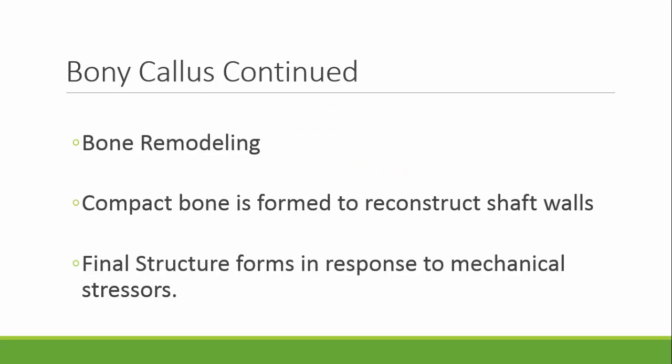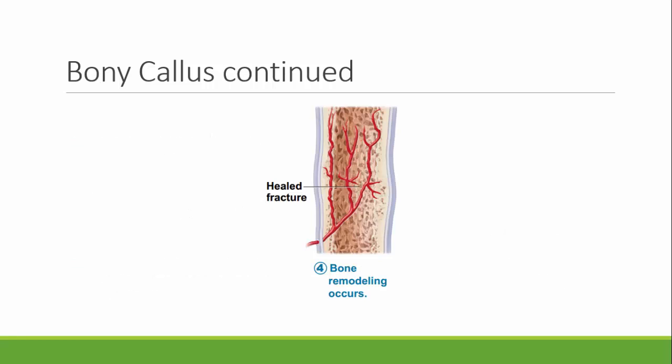The bone callus continues into the final step of bone fracture repair. The bone will remodel and compact bone is formed around the edges to reconstruct the shaft walls. The final structure forms and shapes itself in response to the mechanical structures found within the bone. Pictured here is the final and longest step. The fracture is healed and the bone has remodeled to appropriately have the harder, more mineralized bone tissue on the outside for the wall and the spongy inside for the vessels.